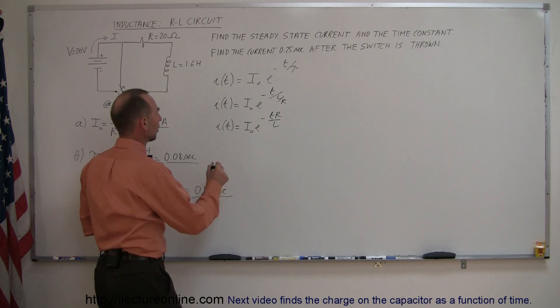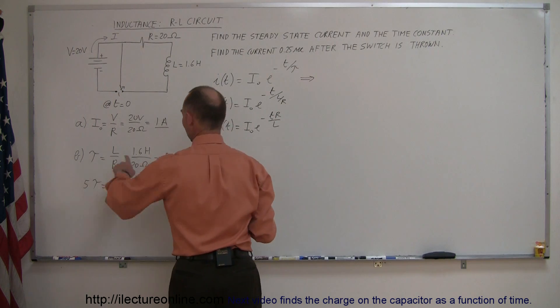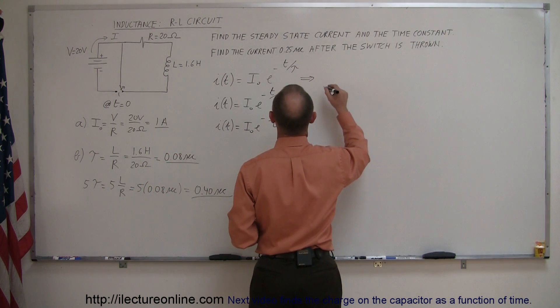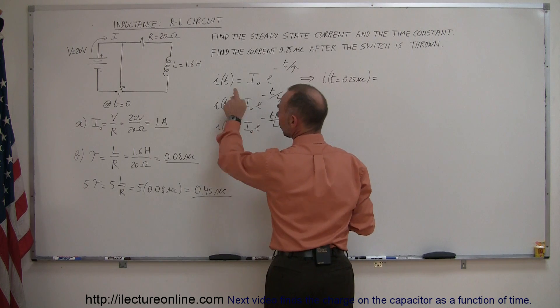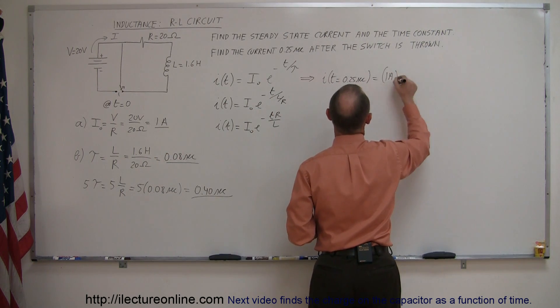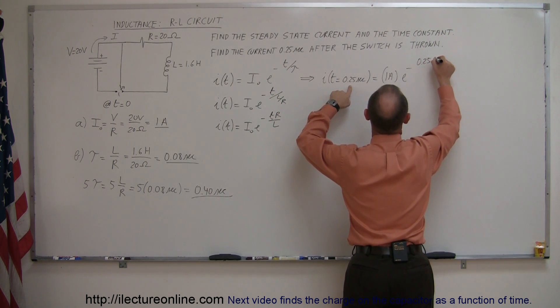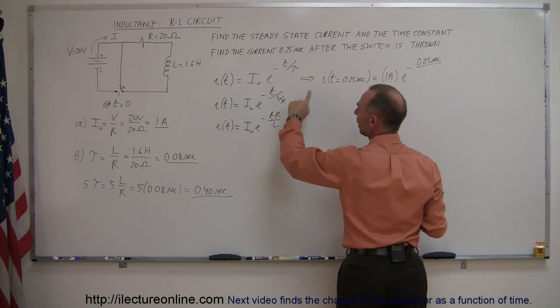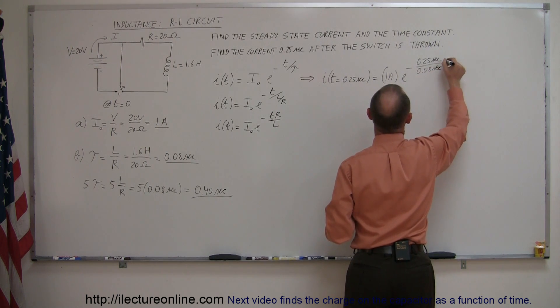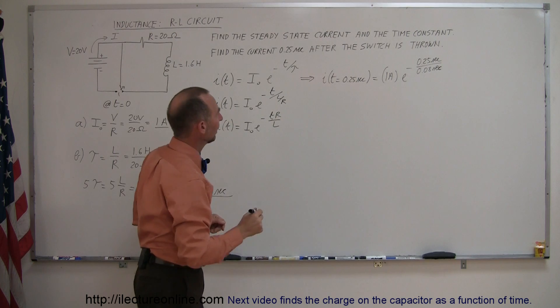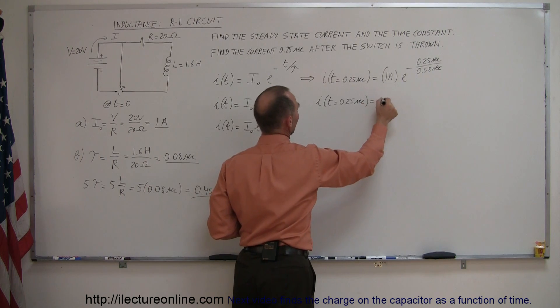Now we want to find the current at 0.25 seconds. Since tau, I'm going to use this equation right here. Since I know what tau is, I calculated right here to be 0.08 seconds. I can say that i when time is equal to 0.25 seconds, that's equal to i initial which is equal to 1 amp times e to the minus t where t was 0.25 seconds divided by tau and tau is 0.08 seconds.